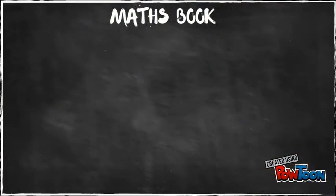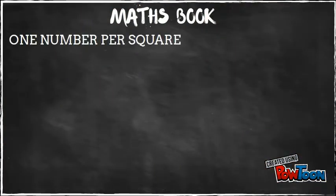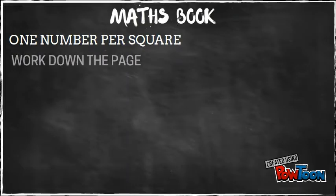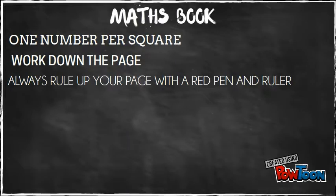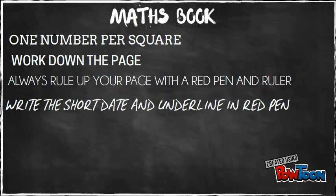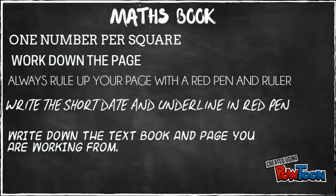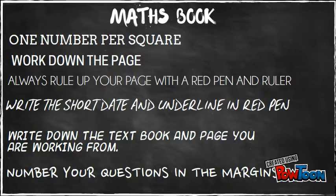These are the expectations in your maths book. One number per square. Work down the page. Always roll up your page with red pen and ruler. Write down the short date and underline it in red pen. Write down the textbook and the page you're working from and number your questions in the margin.